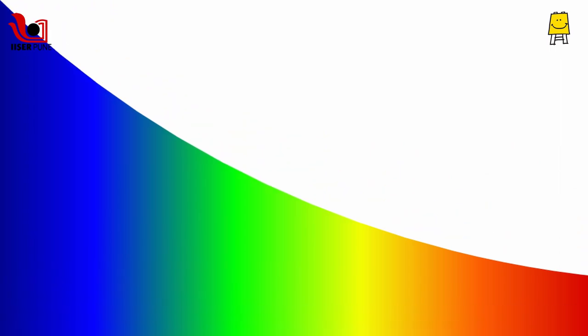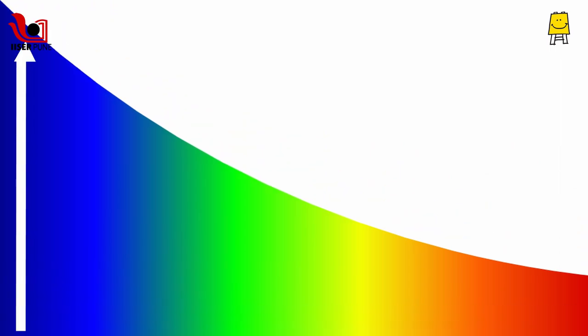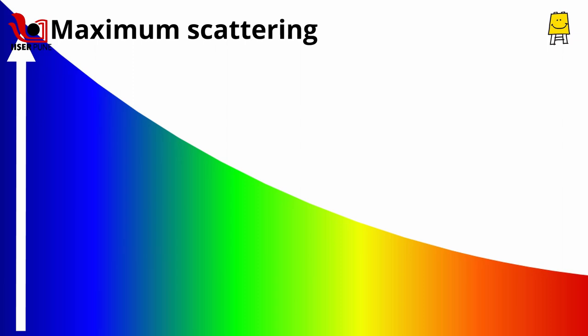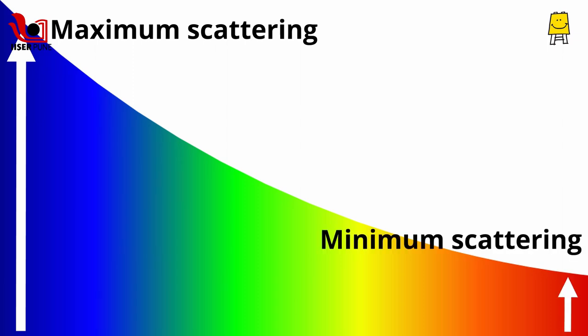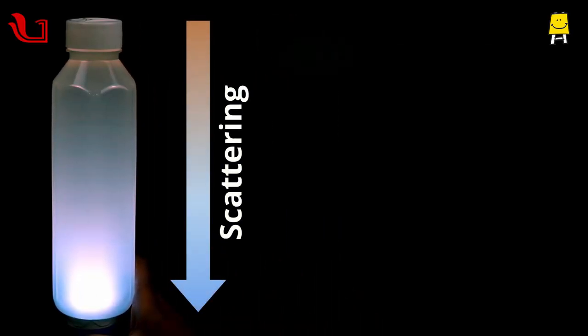We know that white light is made of many colors. If the size of the particles is very small, different colors of light get scattered to varying extents. Blue color gets scattered the most, whereas red gets scattered the least. This is also how light is scattered in water with Tittal particles.